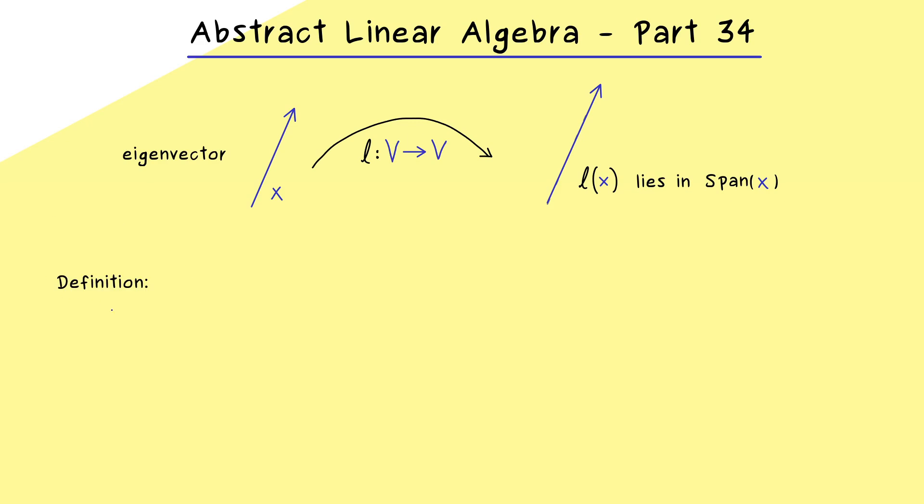Therefore I think we don't need more motivation here and we can immediately go to the definition. Hence let's fix our general F vector space V and a general linear map we call l. Now important to note is that everything in the definition here will work for finite dimensional vector spaces but also for infinite dimensional spaces.